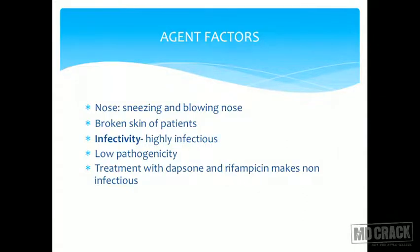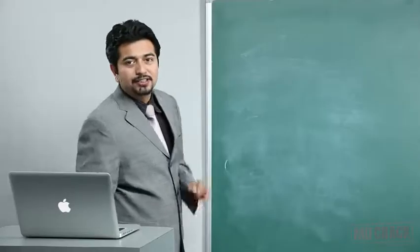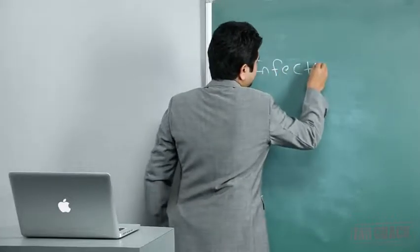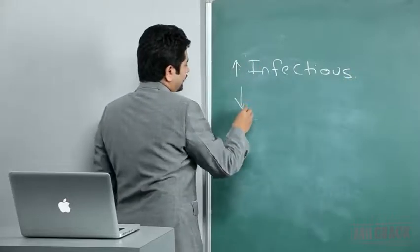Leprosy is highly infectious but has very low pathogenicity. This is an important distinction — there is a difference between infection and disease. Leprosy spreads very fast, but it cannot easily cause overt disease. So leprosy is highly infectious, low pathogenicity, and therefore very low virulence — since virulence requires pathogenicity first.